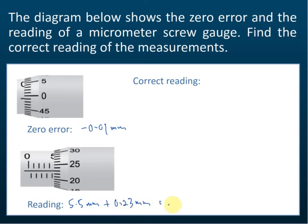Which is equal to 5.73 mm. So the main scale is 5.5, the thimble scale is 0.23. 5.5 plus 0.23 equals 5.73.